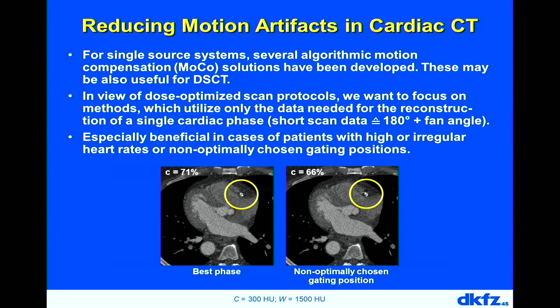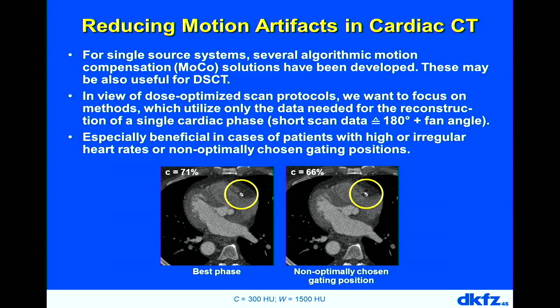A retrospectively gated scan has a best phase — for one patient it was at 71% between R-peaks — showing the least motion artifacts. Moving just a few percentage points away, for example to 66%, already introduces significant motion artifacts. It's critical to find the best phase and acquire X-ray data only in that window, but it's not easy. The example shows a best phase image and the phase 5% away with visible artifacts.